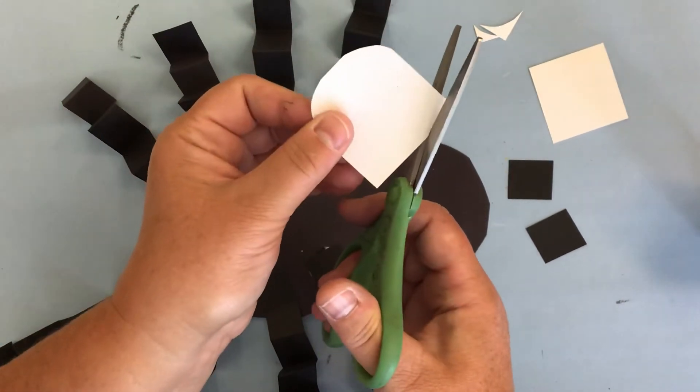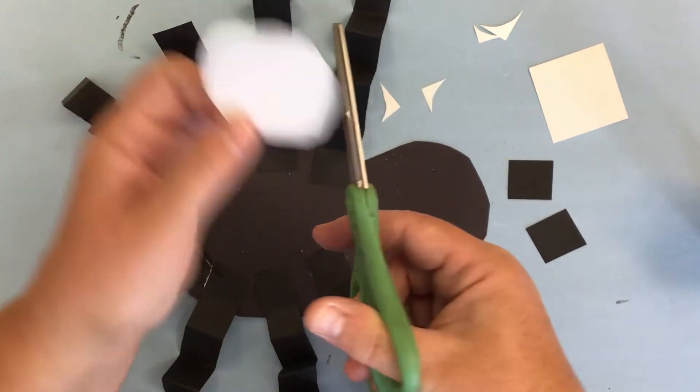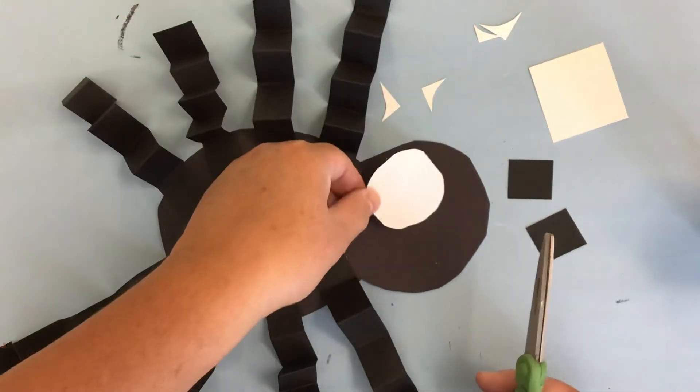Turn and round. Turn and round. And see my scissors are still pointing out. I've got one eye done.